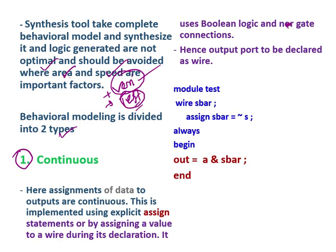For example, in a continuous assignment, whenever there is a change on the right-hand side, it will be updated at the same moment to the left side. The variable on the left must be declared as 'wire'. For example, in an 'always' block: 'always begin out = a & s_bar' — whenever there is a change in 's', 's_bar' is updated, and then 'out' is updated. This is a continuous assignment, and since 'always' is present, this is also a procedural block.